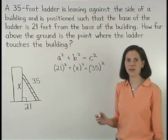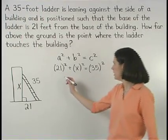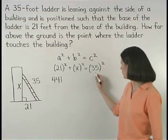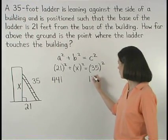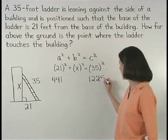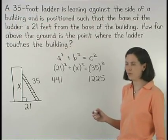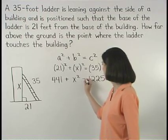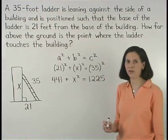Solving from here, 21 squared is 441 and 35 squared is 1225. So we have 441 plus x squared equals 1225.